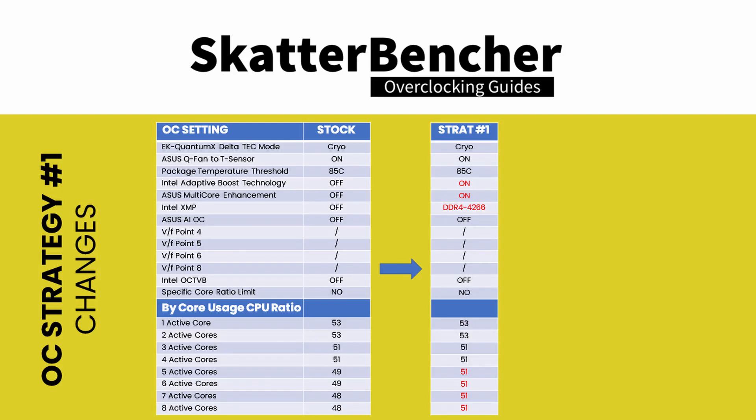In our first overclocking strategy, we simply unlock the extra performance that is provided by enabling Intel ABT, enabling ASUS MCE, and enabling Intel XMP. There are three main differences between the default configuration and this overclocking strategy. First, Intel ABT allows the CPU to boost to 5.1GHz when all cores are active, whereas the default configuration only allows 5.1GHz for up to 4 active cores and up to 4.8GHz with 8 active cores. Second, Intel XMP increases the memory frequency to DDR4-4266, up from the stock speed of DDR4-2133 — do note that this will also enable Gear 2 mode. Third, ASUS MCE unlocks the Turbo Boost parameters, allowing for essentially unlimited time at the highest performance levels.